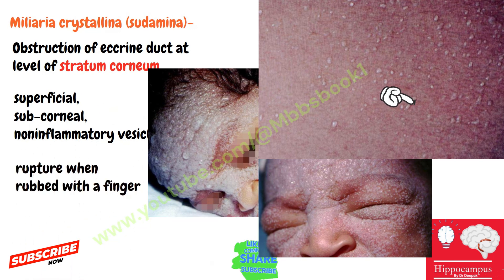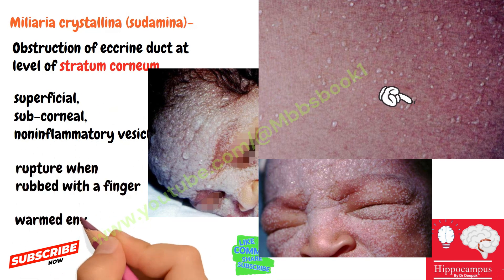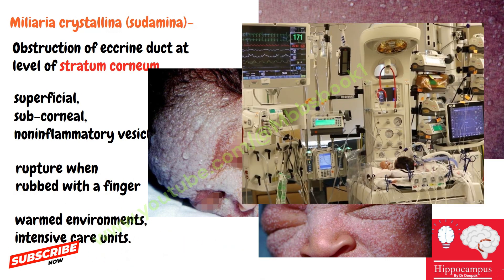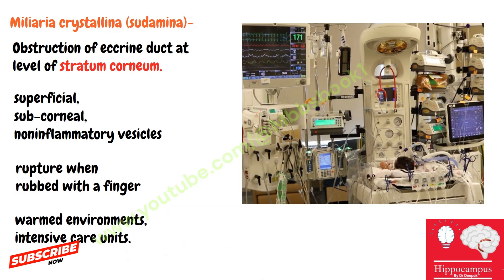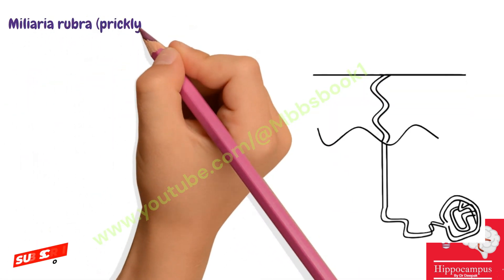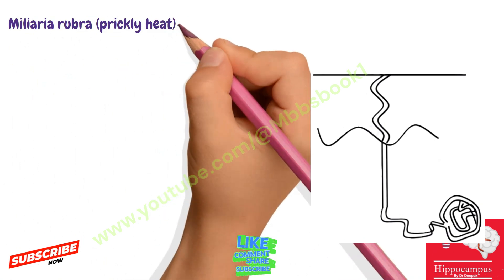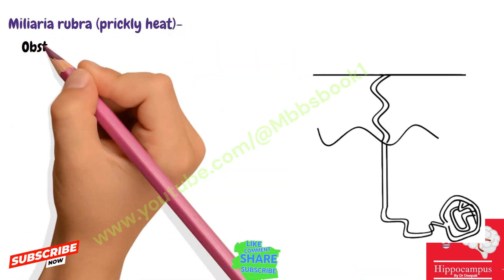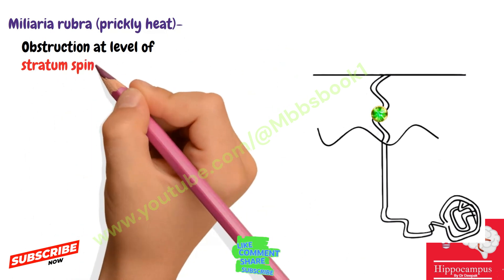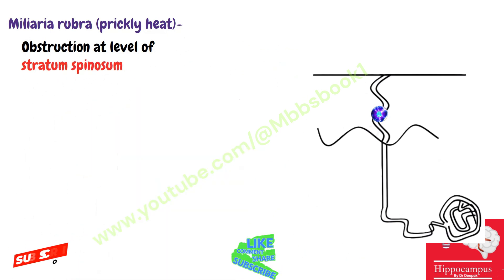Miliaria crystallina is common in infants in warm environments, including intensive care units. The second type is miliaria rubra, which is also known as prickly heat. If there is obstruction at the level of the stratum spinosum, this is called miliaria rubra.